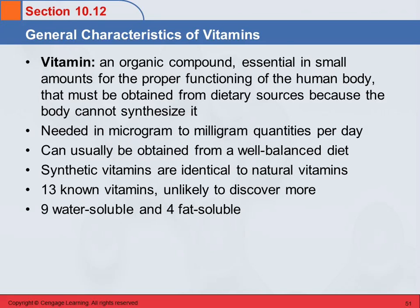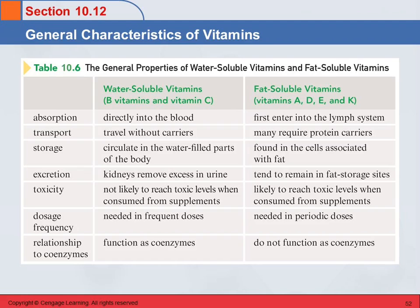There are 13 known vitamins. We are unlikely to discover any more because it's been quite a long time since the last one was discovered. Nine of them are water-soluble and four of them are fat-soluble. This table gives an overview of what these vitamins do — both the water-soluble and fat-soluble vitamins — and you can see that they function in many different areas.